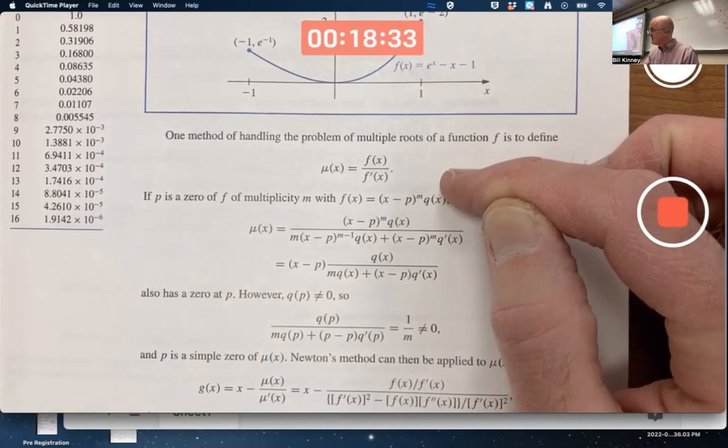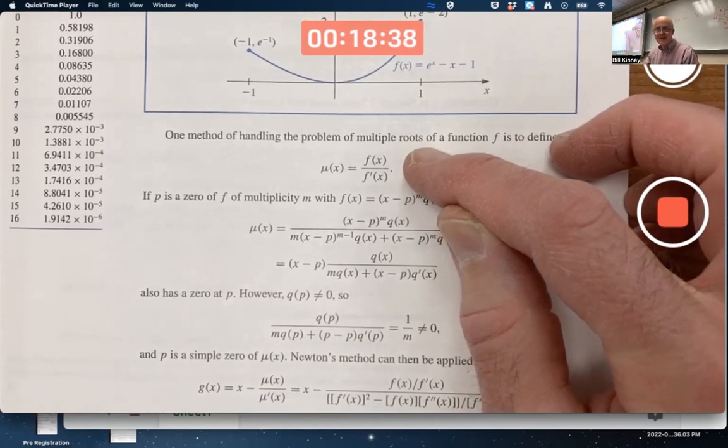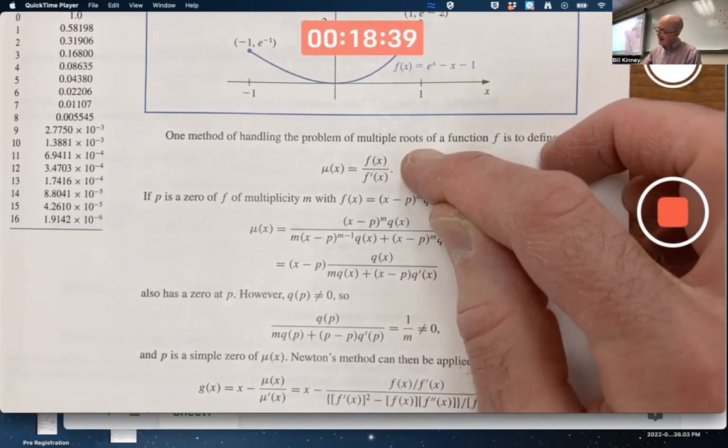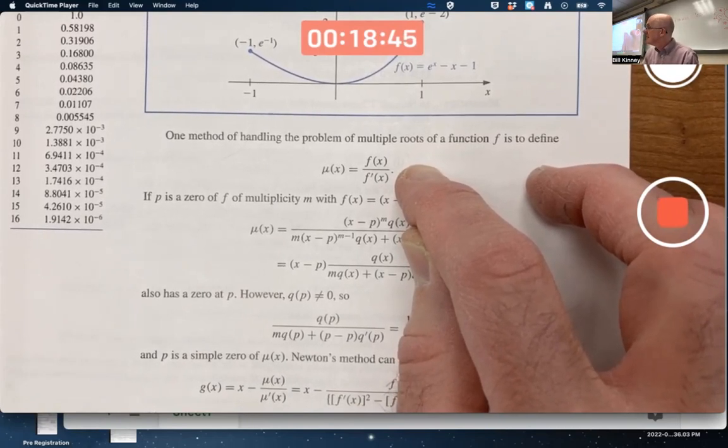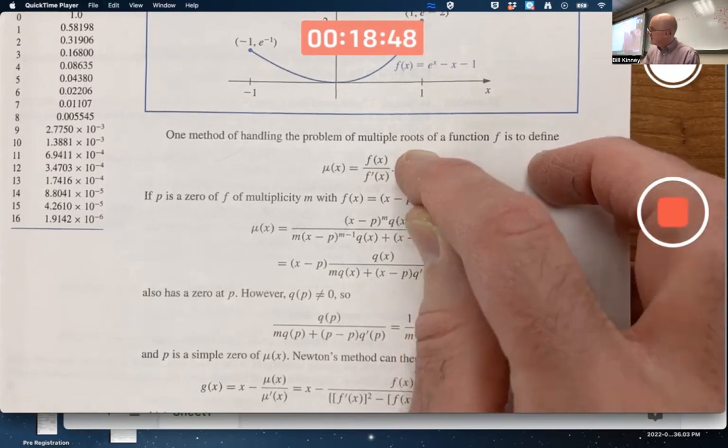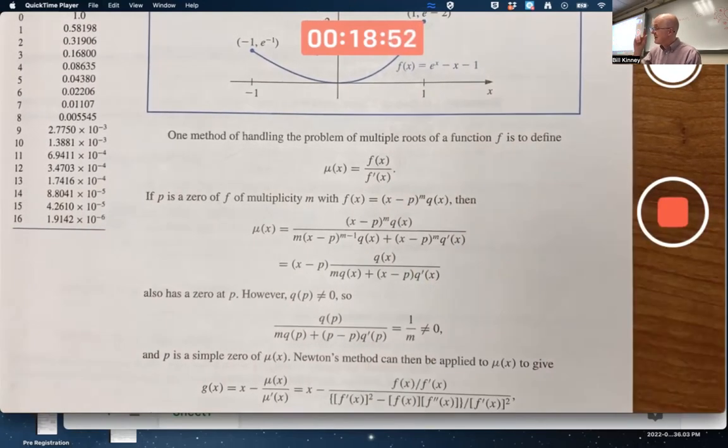As long as you're not dividing by zero, although if it's a root of multiplicity m, actually its derivative has a root at the same spot, but its multiplicity would be m minus one. And so when you divide, you should get a root of multiplicity one, a simple root.